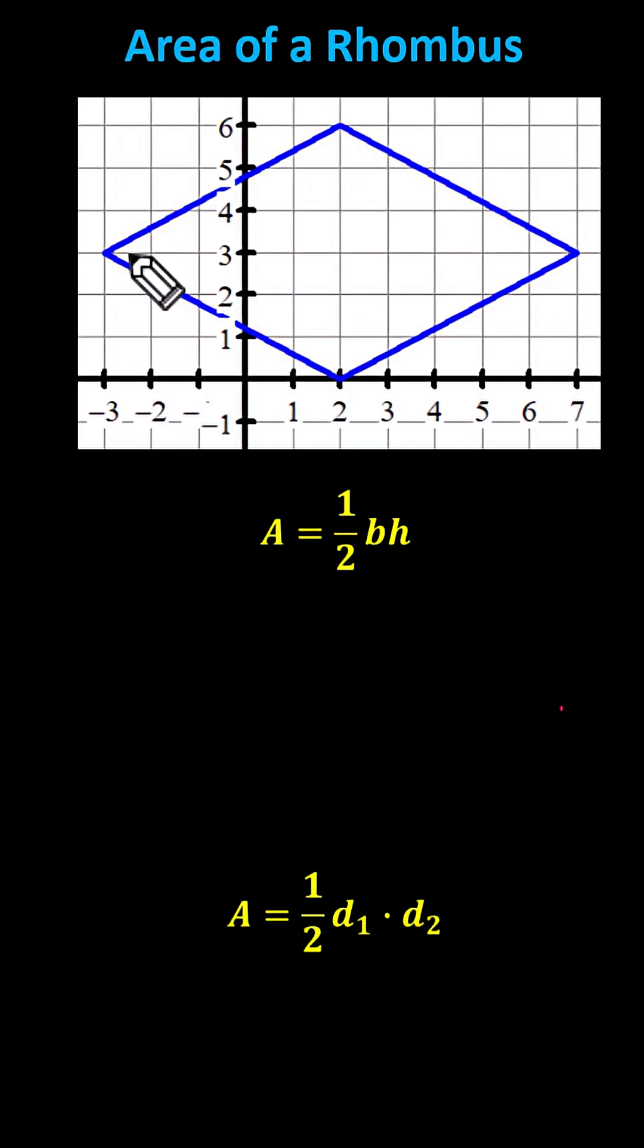If we were to cut the rhombus horizontally here, notice we have two triangles, one on top and one on bottom, that are congruent, meaning the same size and same shape. Therefore, we can find the area of one of them and then double it to find the total area.